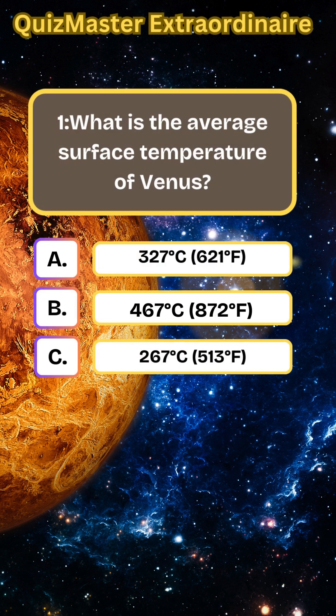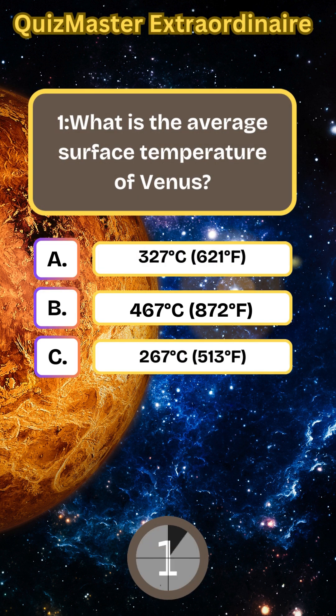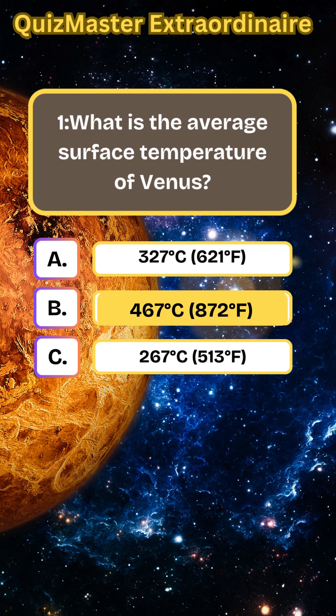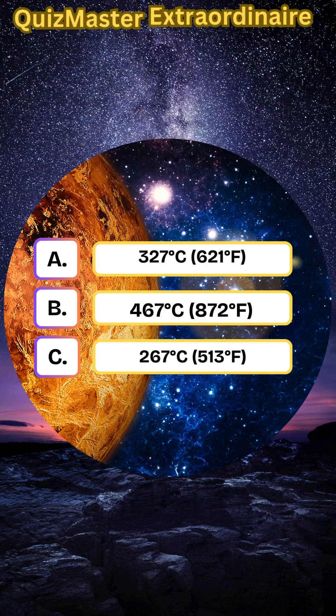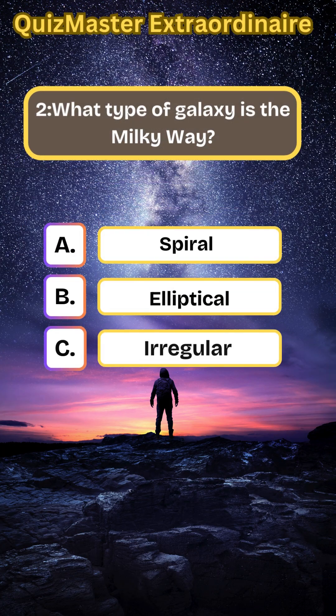What is the average surface temperature of Venus? 467. Before you continue, don't forget to support us by liking and subscribing.